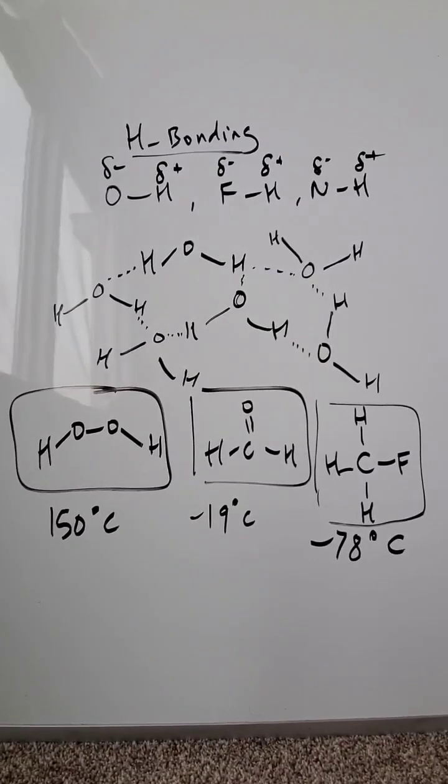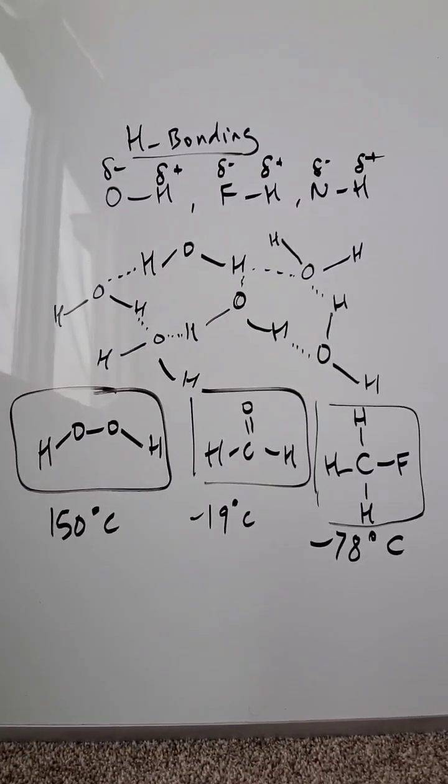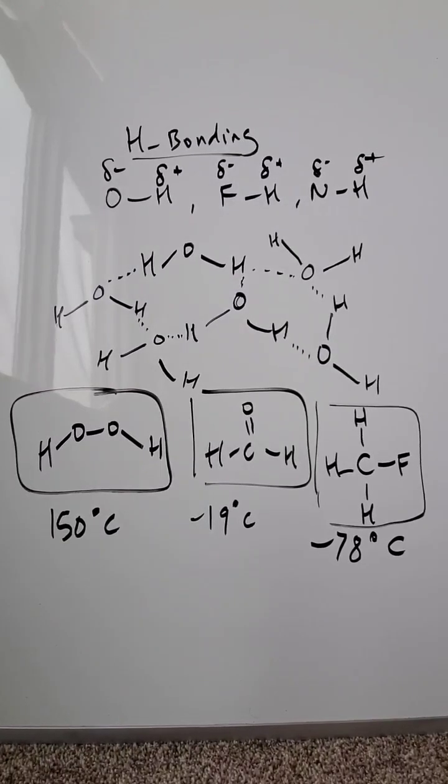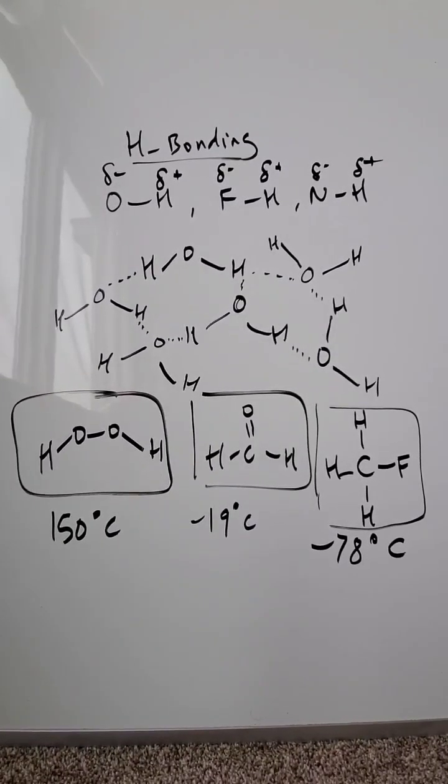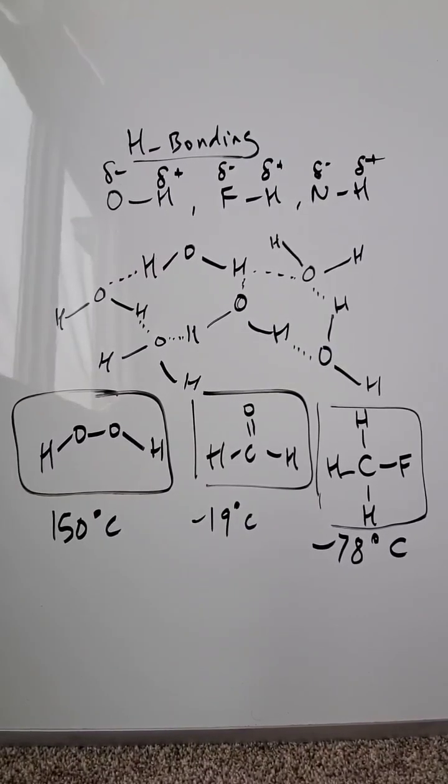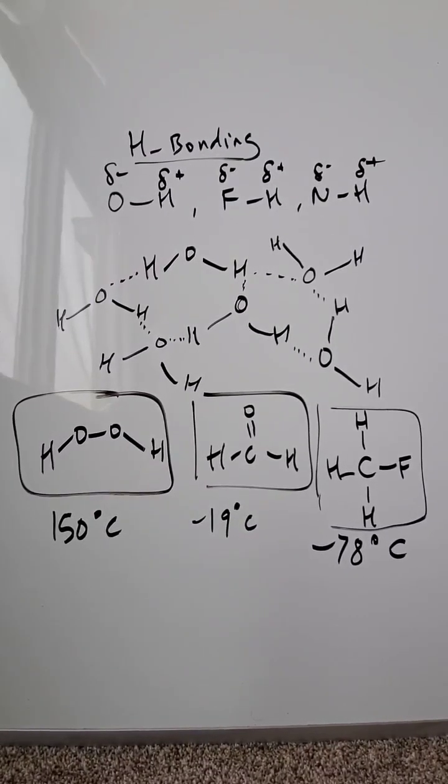Hydrogen peroxide is the only compound there which can undergo hydrogen bonding because hydrogen is bonded to oxygen. In the other two compounds, hydrogens are bonded to carbon. You don't have hydrogen bonding, and the hydrogen peroxide's very high boiling point is the result of that hydrogen bonding.